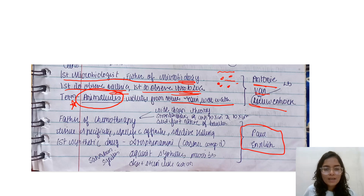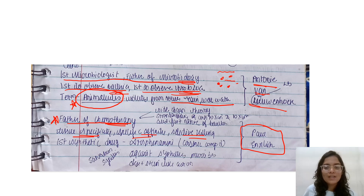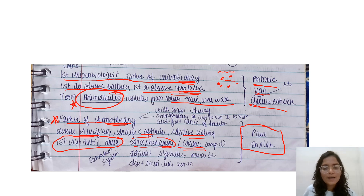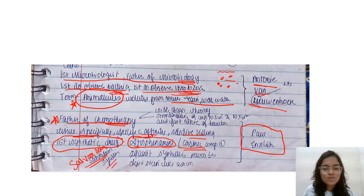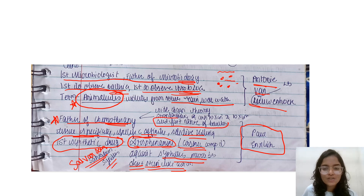Next is Paul Ehrlich. He is regarded as the father of chemotherapy. He described tissue specificity, specific affinity, and selective killing. He was the one who discovered the first synthetic drug — Arsphenamine, which is an arsenic compound also called Salvarsan — used for the treatment of syphilis. It has a dye-plus-stain-like action. He also discovered the acid-fast nature of bacteria, standardization of antitoxins and toxins, and the side-chain theory.